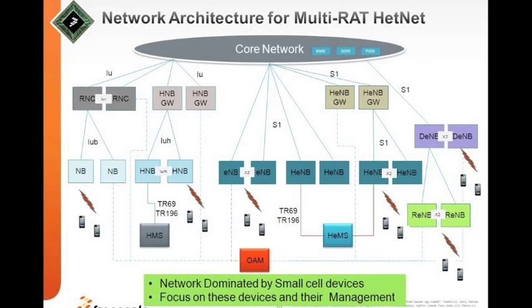This picture shows the overall network architecture for a multi-RAT configuration. There is the 3G RNC macro solution, the 3G femto solution, and the 4G home solution with gateways, femtos, macros, relays, and repeaters. The whole thing is managed by EMS — a separate layer for LTE as well as 3G — and there is OAM which manages the whole network. The network is really dominated by small cell access points requiring a lot of focus on managing these devices.